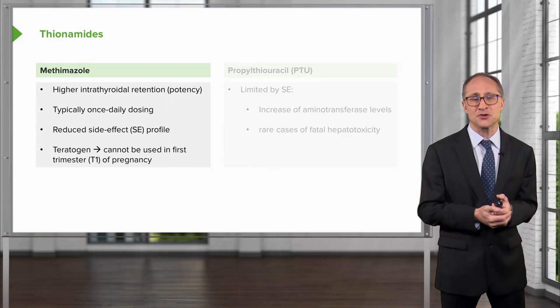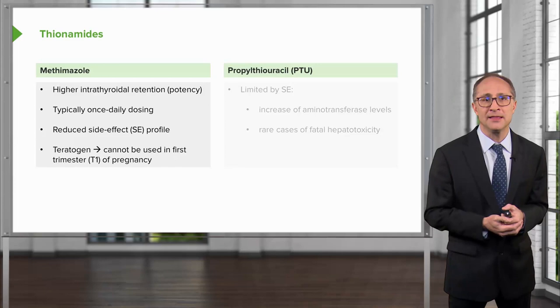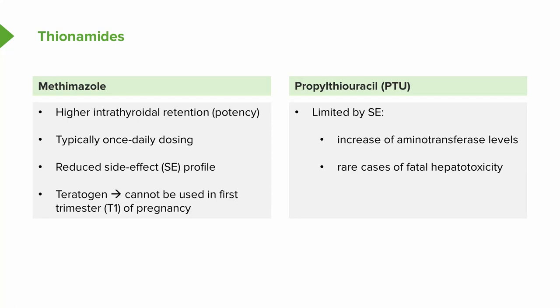Another drug is called propylthiouracil, or PTU, which has limitations based on its side effects. It can increase aminotransferase levels and affect the liver, and in very rare cases, lead to fatal hepatotoxicity.